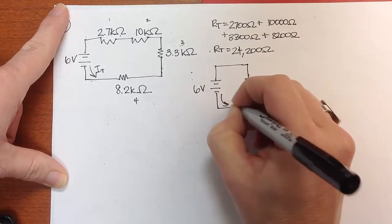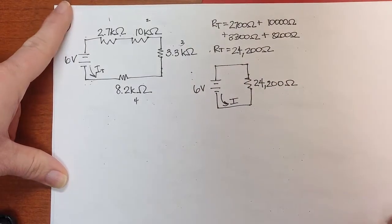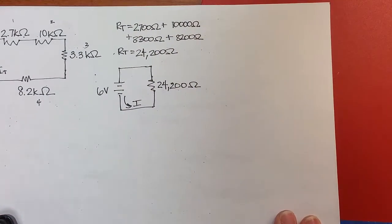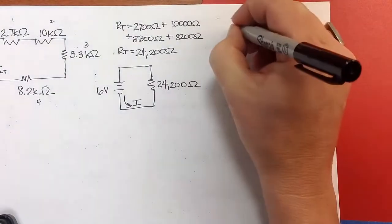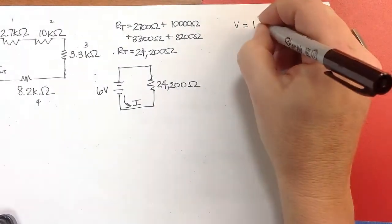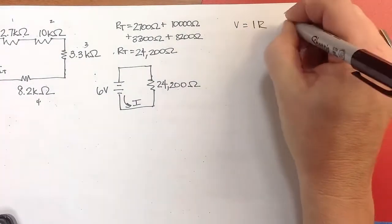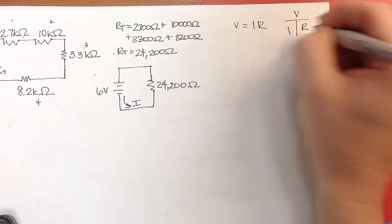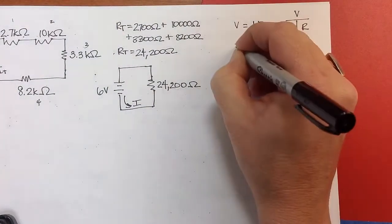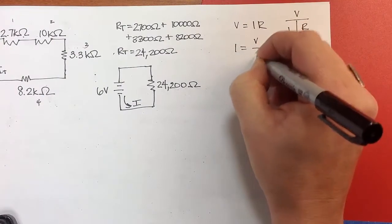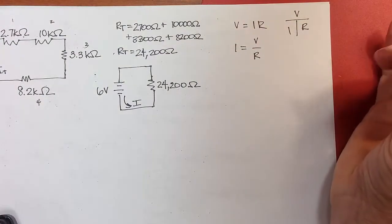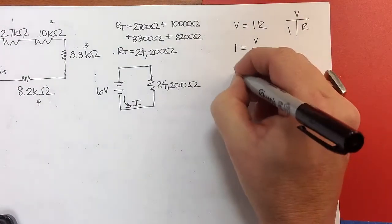Now, it's easy enough to find I. If we want to find I now for that, we just use Ohm's Law, V equals I R, however you prefer to do this. I is going to be equal to V over R, and I will plug in.